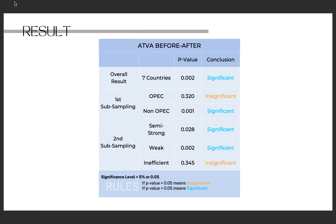The result of average trading volume activity before and after shows significance in several countries, and most subsamples show the same result, except for OPEC and the inefficient market form. OPEC shows insignificant average trading volume activity, possibly because oil and gas stocks in these countries are regulated by OPEC, and investors may not feel greatly affected by the Russia-Ukraine invasion announcement, resulting in no significant transactions. The inefficient market subsample also shows no significant difference in average trading volume activity, indicating that investors in countries with inefficient market forms do not react immediately to make stock transactions.